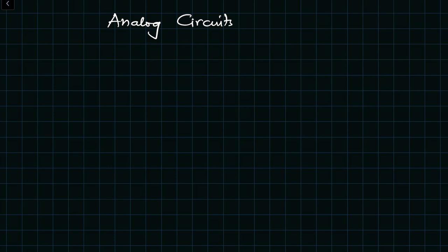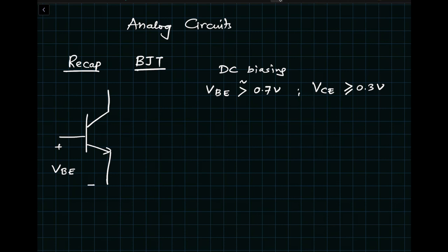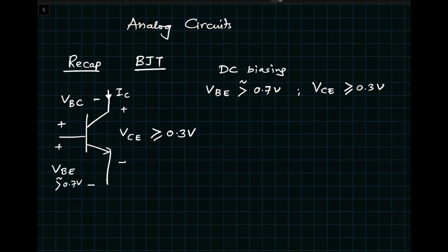We'll start with a recap of BJT and MOSFET operation. A BJT can be used as an amplifier when it is in the active region. The active region is defined when VBE is greater than 0.7 volts and VCE is greater than or equal to 0.3 volts. The collector current flows in this fashion, and we can also say that VBC is less than or equal to 0.4 volts.